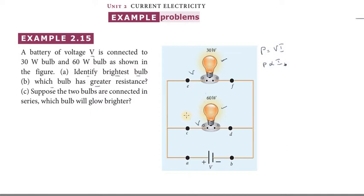So this is parallel connection. In parallel connection with a 30 watt bulb and 60 watt bulb, which is brighter? Power is directly proportional to I, and in parallel the voltage is the same, so the 60W bulb is brighter.